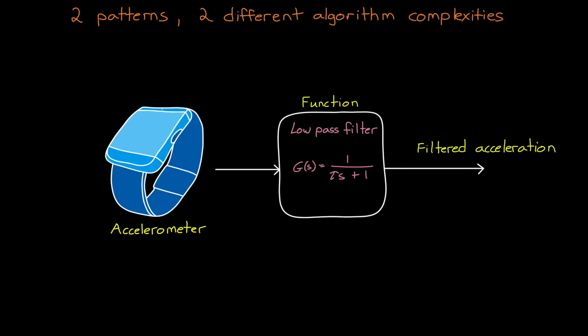In this case, the pattern we're looking for is essentially the true acceleration, and the function that generates it might just be a low-pass filter to remove any high-frequency noise. So in this case, it's a pretty simple function, and one that could easily be designed with traditional methods. And by traditional methods, I'm generally referring to any method that doesn't rely on some form of machine learning.